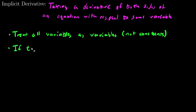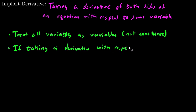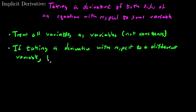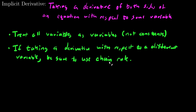If taking a derivative with respect to a different variable, be sure to use the chain rule. What I mean by this is the following: let's just say that I'm taking the derivative with respect to t.